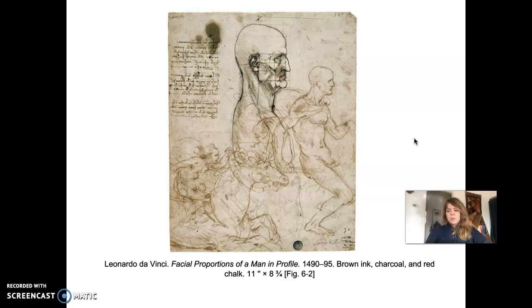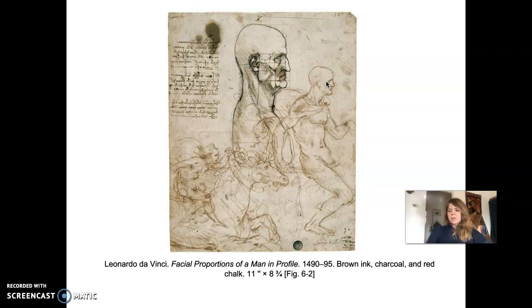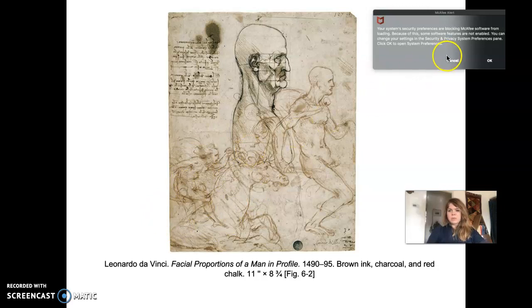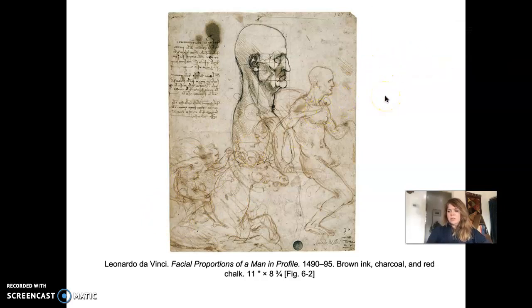His drawing of Facial Proportions of a Man in Profile, from around 1490–95, done in brown ink, charcoal, and red chalk, shows him measuring the various ratios of a human face. You can see a grid overlaid on the face helping him measure the different proportions — he was potentially trying to derive a mathematical formula for human faces. He also sketched a figure on horseback on the same page and wrote himself notes on the side, showing the informal nature of his sketchbook.